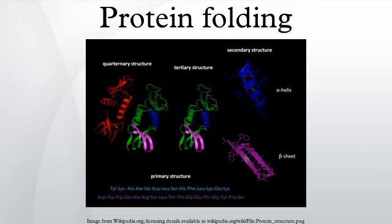Levinthal's paradox is a thought experiment, also constituting a self-reference in the theory of protein folding. In 1969, Cyrus Levinthal noted that because of the very large number of degrees of freedom in an unfolded polypeptide chain, the molecule has an astronomical number of possible conformations — an estimate of 3^300 or 10^143 was made in one of his papers. The Levinthal paradox observes that if a protein were folded by sequentially sampling all possible conformations, it would take an astronomical amount of time to do so, even if conformations were sampled at a rapid rate. Based upon the observation that proteins fold much faster than this, Levinthal proposed that a random conformational search does not occur, and the protein must therefore fold through a series of metastable intermediate states.